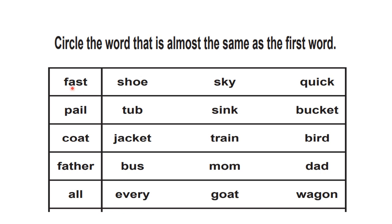This is our first video on synonyms, which will be very useful for all the little ones — pre-KG, LKG, UKG children — as well as Grade 1, Grade 2, and Grade 3. We will learn how to find which word is most similar or almost the same as the first word. For example: fast, pale, father, all — these are the first words, and from each row you need to find the similar word.